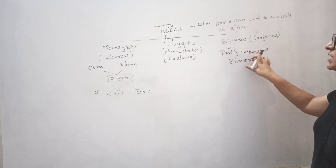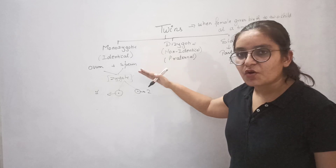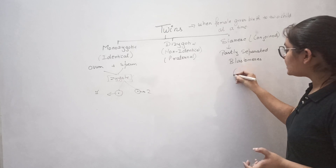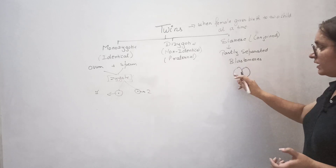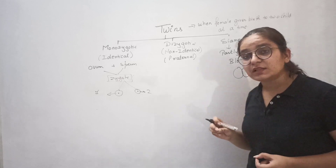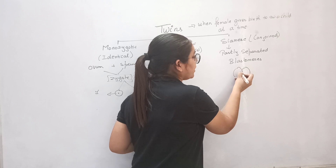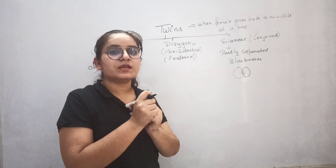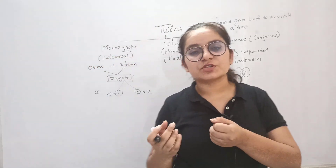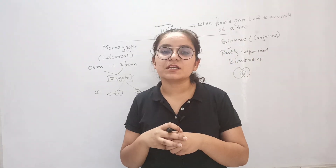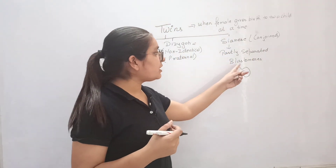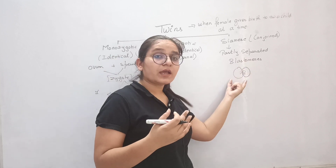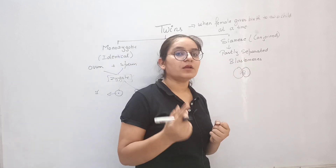There is also a type called siamese or conjoined twins — that is partially separated blastomeres. During the formation of monozygotic twins, if the zygote is undergoing mitotic division but all the blastomeres do not separate — because it is an abnormality — some blastomeres remain joined. From the portion where these blastomeres are joined, the twins will be joined at that portion. You may have heard in the news about twins that are produced but share a single heart or are joined at the back. That depends on which organ's blastomeres did not separate properly.